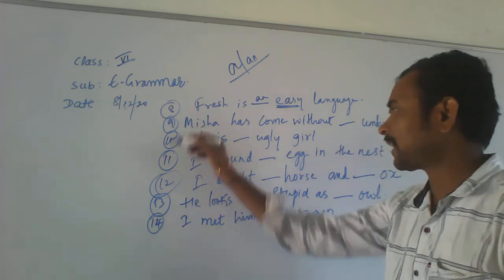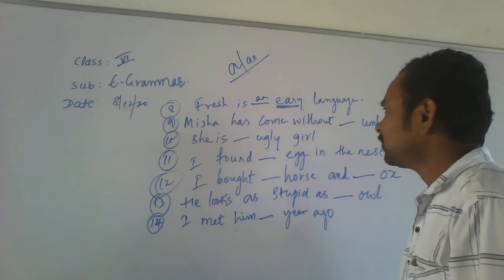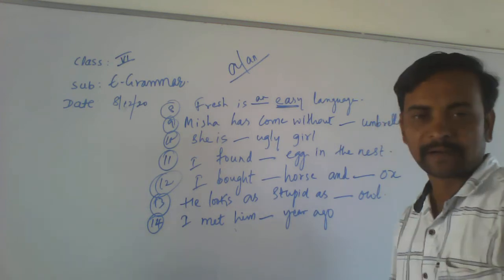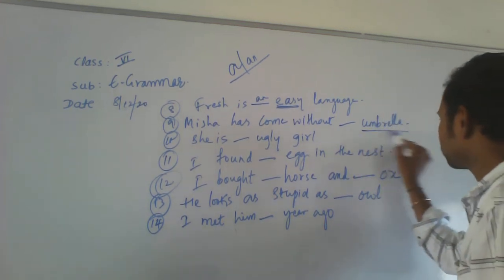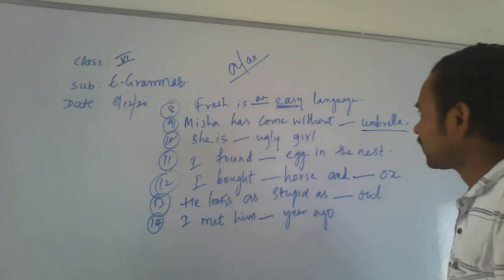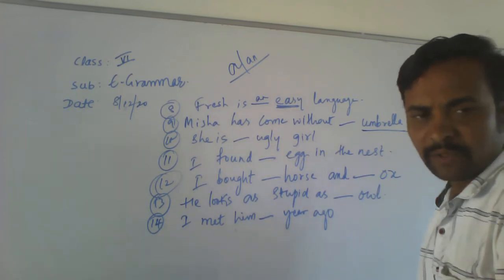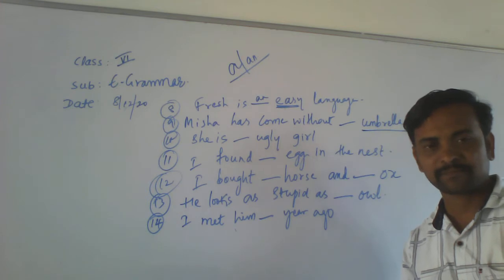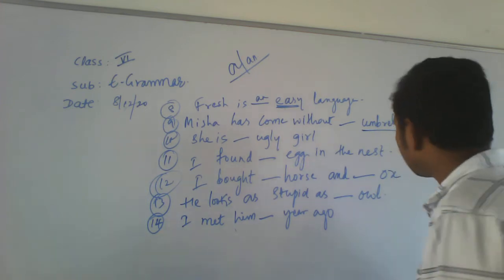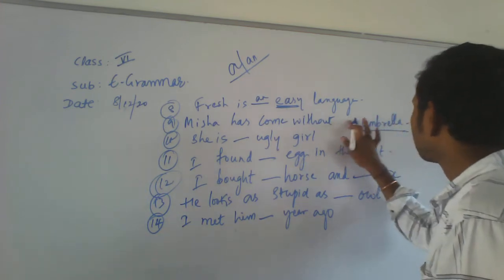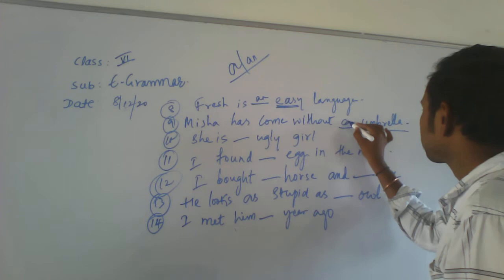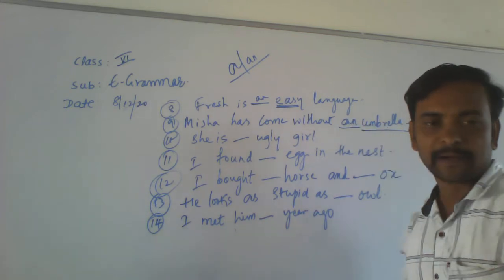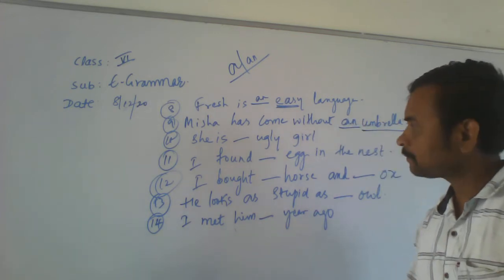Let's come to the 9th one. Nisha has come without a blank umbrella. Just observe this word — umbrella. That word starts with a vowel. So, what article do you have to write here? AN. AN umbrella.